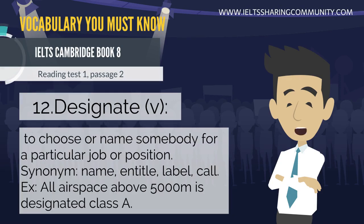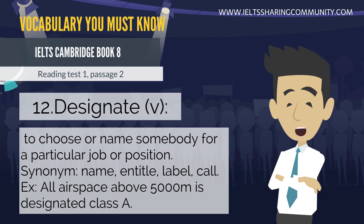12. Designate (v) — to choose or name somebody for a particular job or position. Synonyms: name, entitle, label, call. Example: all airspace above 5000 m is designated class A.